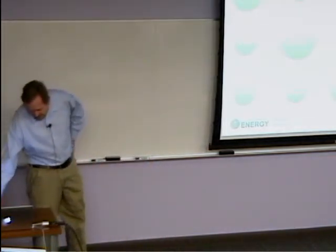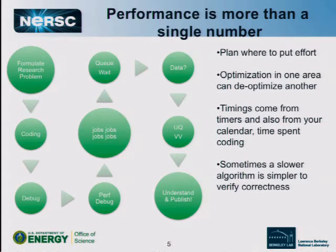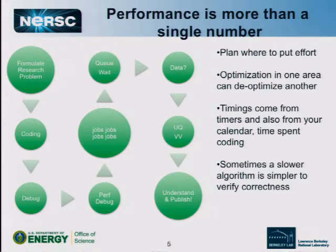It's more than just the megaflop, gigaflop, or teraflop rate from your code. Planning where to put effort and realizing that optimization in one area can de-optimize another is important. One example we see often at NERSC is with data: strategies that work at a small scale are in many cases fundamentally different from strategies that work at large scale. When you go up to thousands or tens of thousands of processors, printf or ASCII output that was fine at small scale becomes the first-order bottleneck.